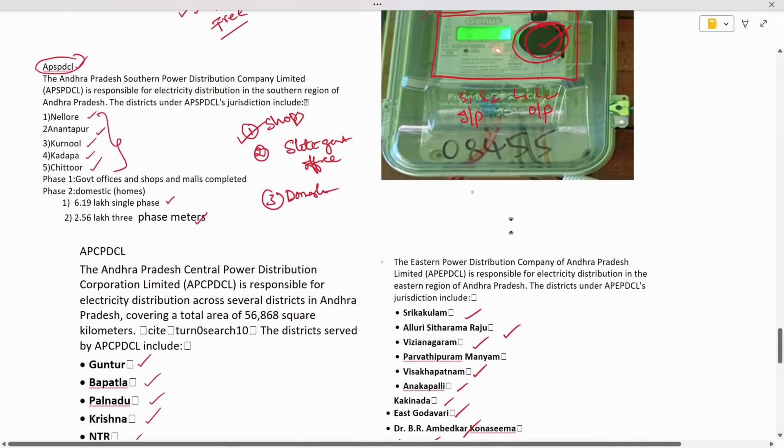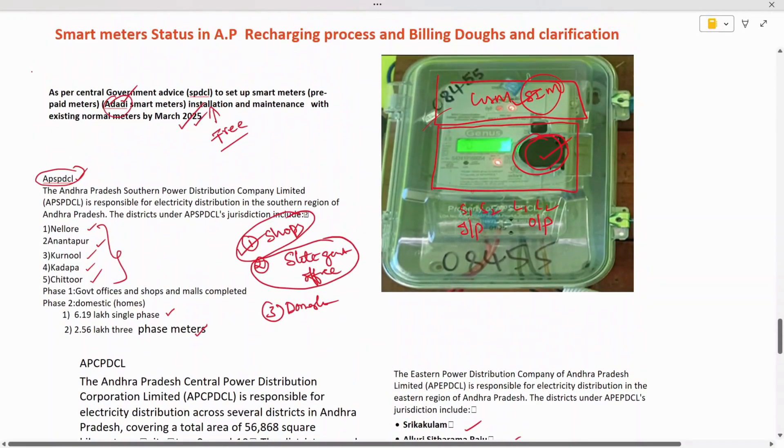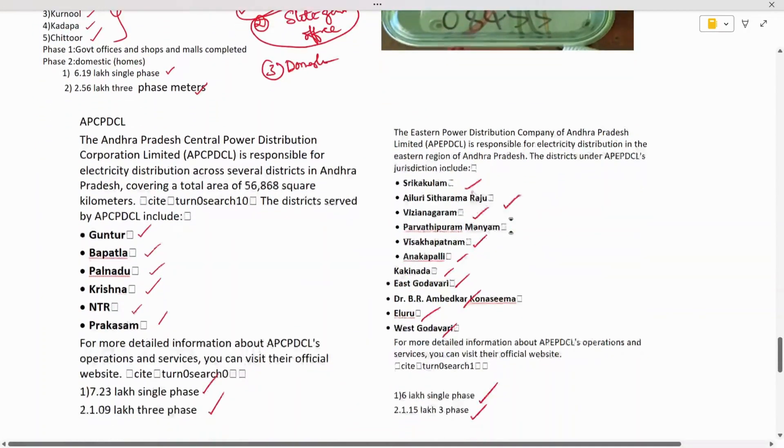All these are domestic installations. The state government has already installed all smart meters in the government sector and all commercial shops. This is the status of Andhra Pradesh smart meters. Now let's see how to recharge these meters and what problems exist in recharging.